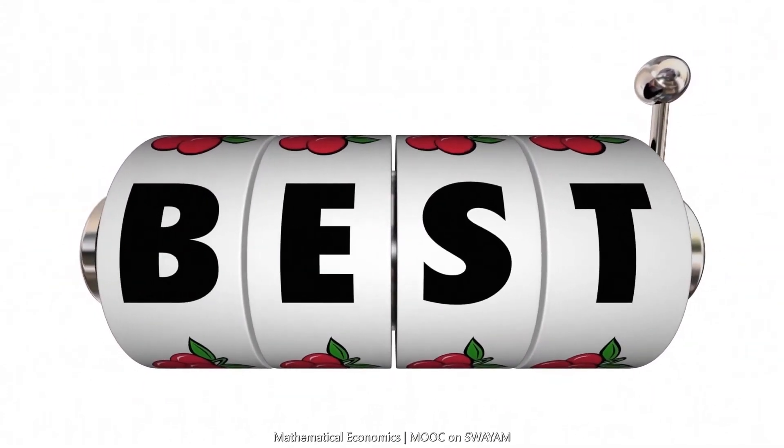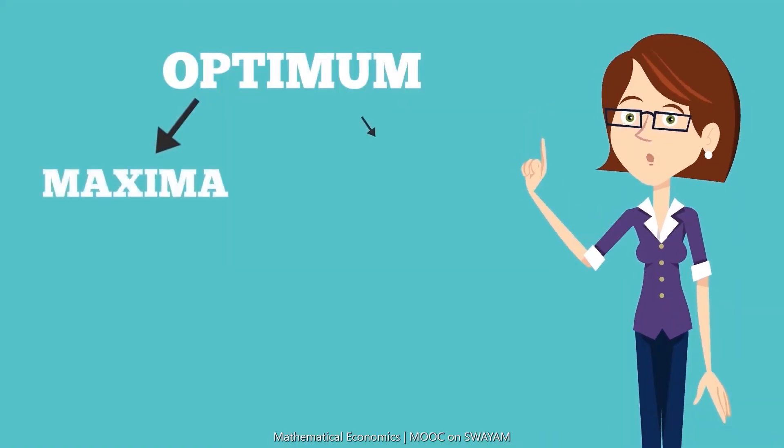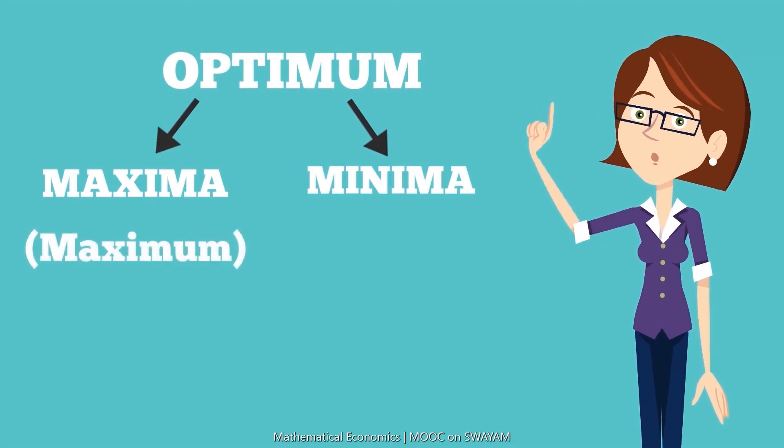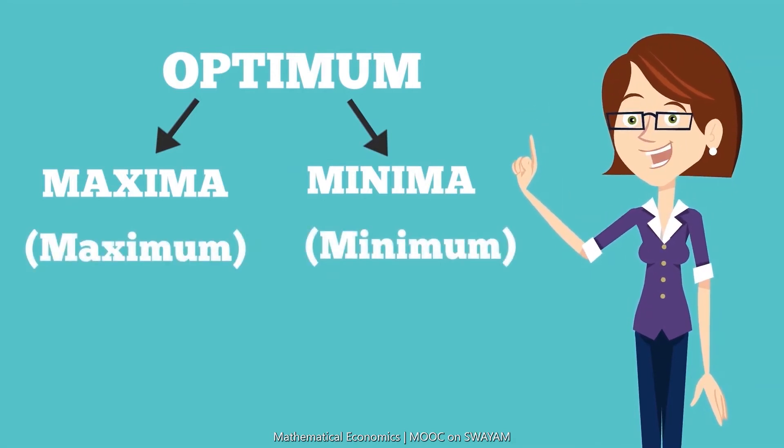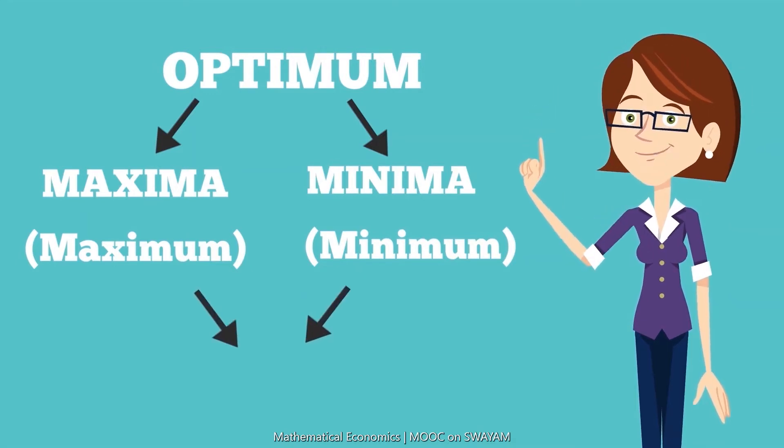Technically, optimum may be maxima or minima. Maxima is the plural form of maximum and minima is the plural form of minimum. These may be global or local.